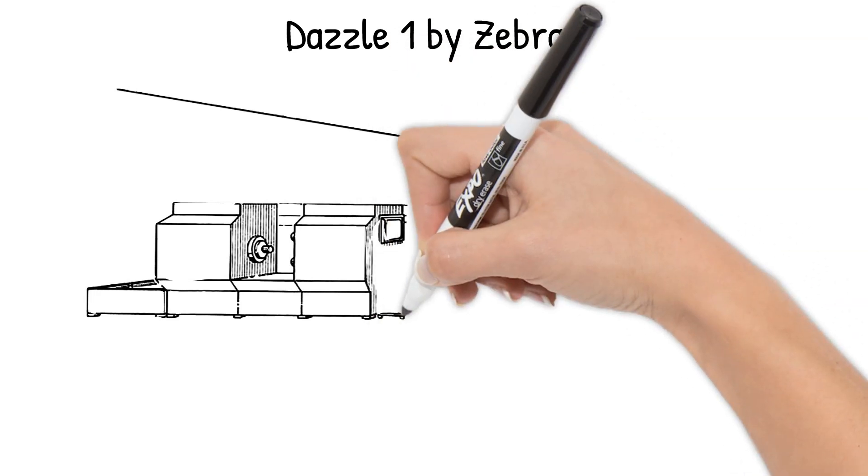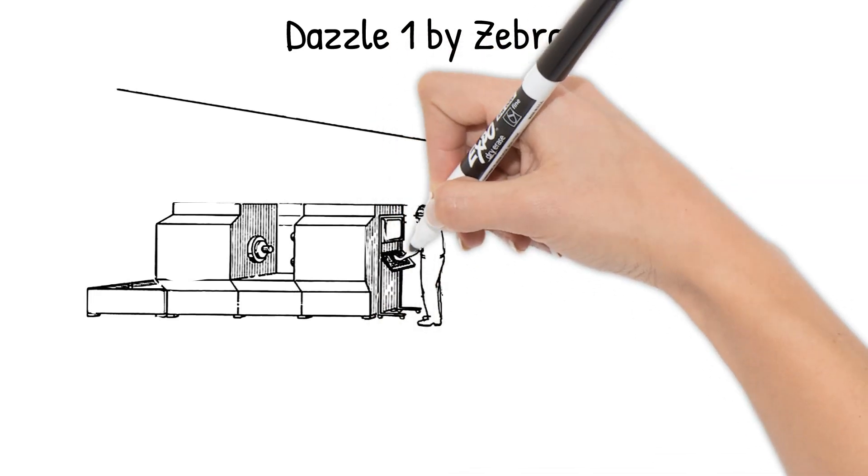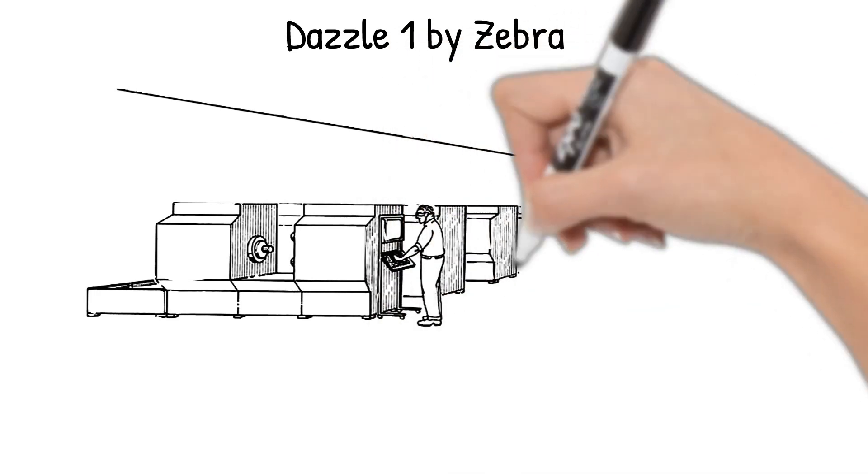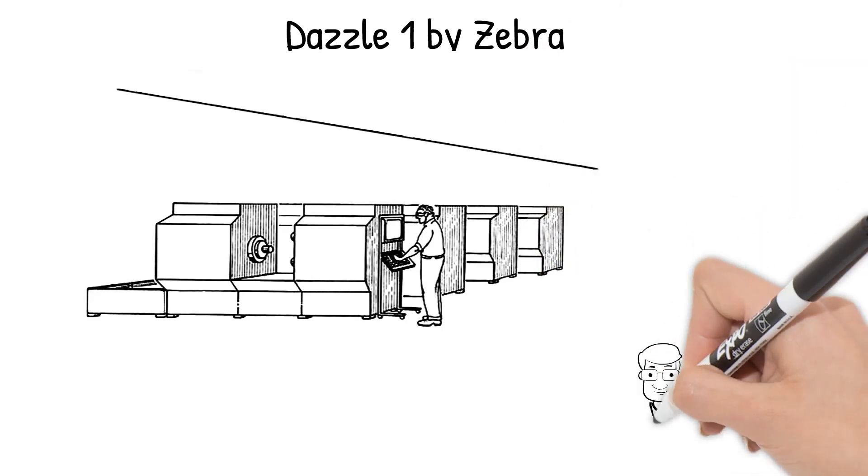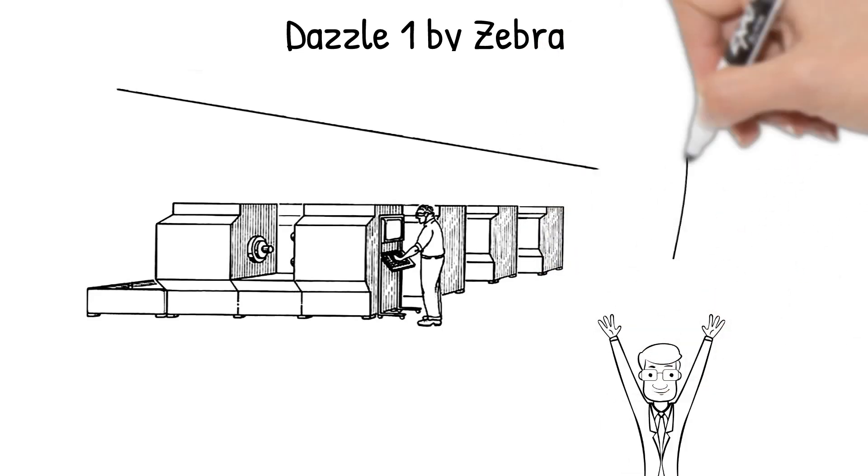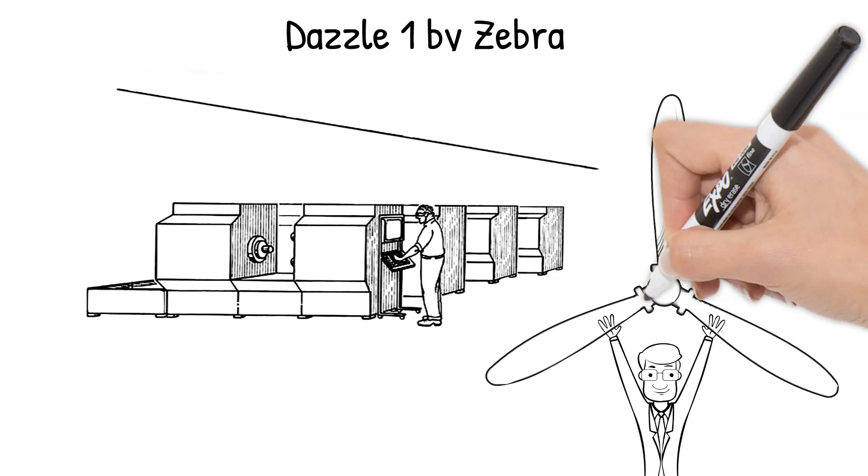Modern metalworking allows for an extreme level of precision and quality in the manufacture of all kinds of parts and materials. Advances in technology, software, and manufacturing techniques have led to a revolution in modern industry.